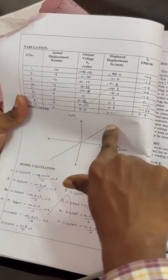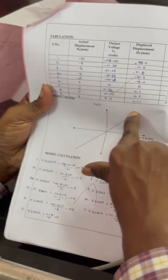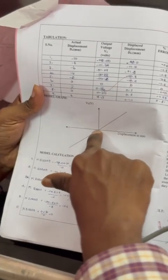This is for positive displacement, which is moving the core from the null position to the right. This is negative displacement, moving from the null position to the left.